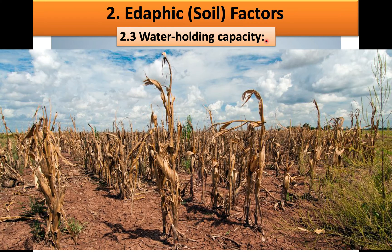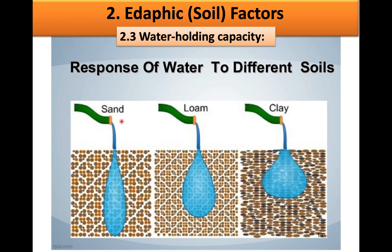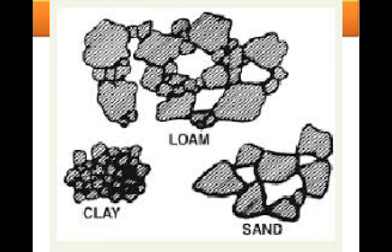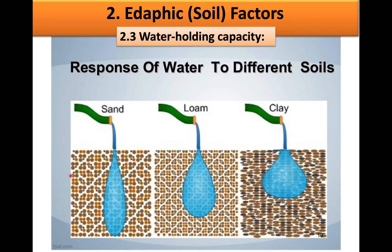If we look at sandy soil, you will notice there are lots of large air spaces between the soil particles. Because of these large air spaces, sandy soil has a very low water holding capacity, meaning water quickly filters through taking along all the valuable nutrients with it. This process is called leaching.